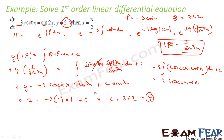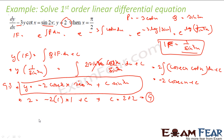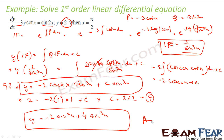I put c equals 4 in the general solution to get the particular solution: y equals minus 2·cos(x)·sin²x plus 4·sin³x. That is the final answer. I found the IF, used the formula y times IF equals the integral of q times IF dx plus c, integrated, obtained the general solution, then substituted y equals 2 at x equals π/2 to find c equals 4 and arrive at the particular solution.